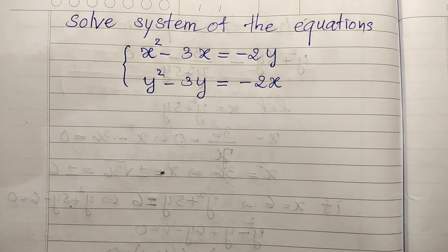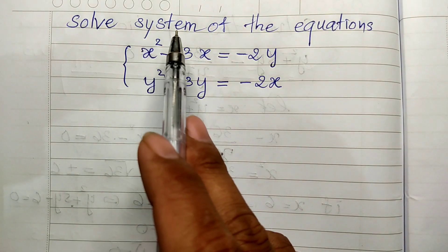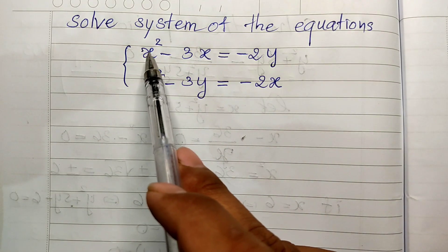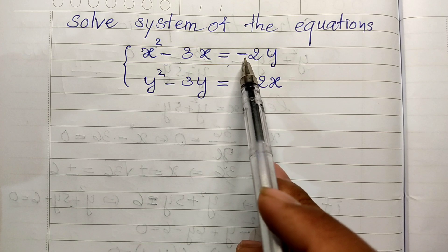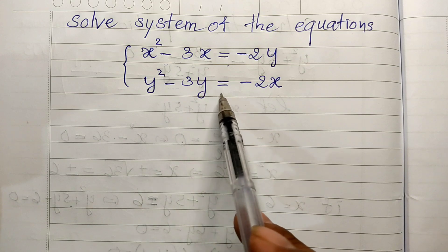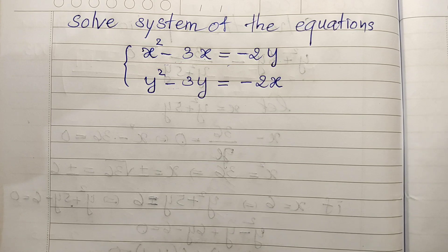Hello everyone, welcome to my YouTube channel. Today I have an exercise on purpose: solve the system of equations. The equations are x squared minus 3x equals minus 2y, and y squared minus 3y equals minus 2x. Do you know how to solve this? If you know, please do it, then come back to watch my video from beginning to end to verify your solution. And before we go to the solution, please don't forget to subscribe to my channel for more exciting videos.